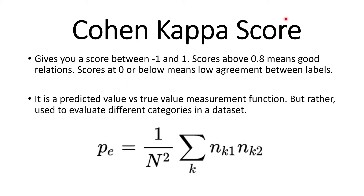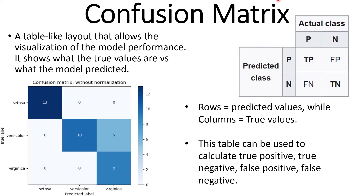Cohen's Kappa score. This gives you a score between negative one and one. Scores above 0.8 indicate good agreement, while scores at zero or below indicate low agreement between labels. It measures predicted value versus true value, but it is mostly used to evaluate different categories in a dataset.